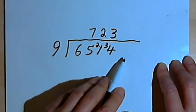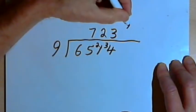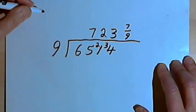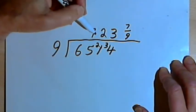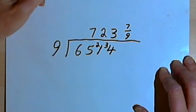There's no more numbers involved. No more digits. So 7 is my remainder. And I'll write that as a fraction, 7 over 9. So the answer to this problem is 723 and 7 ninths. And that's basically all there is to it.